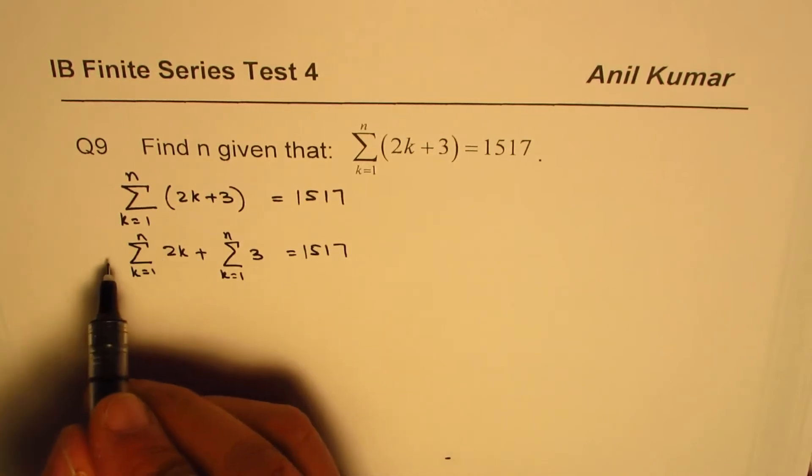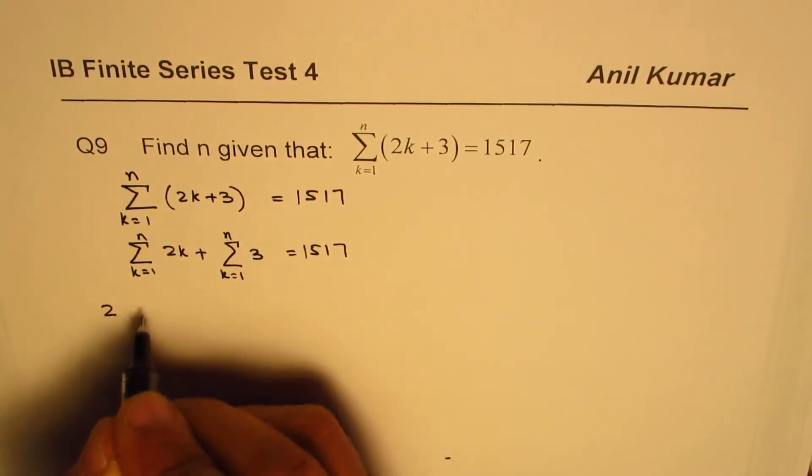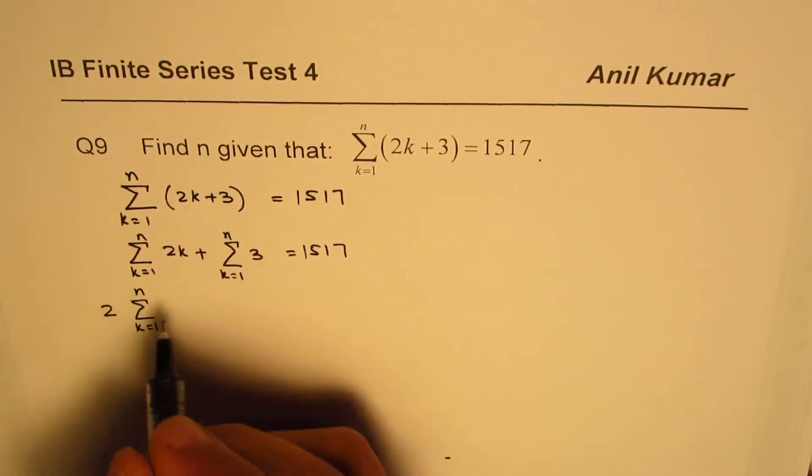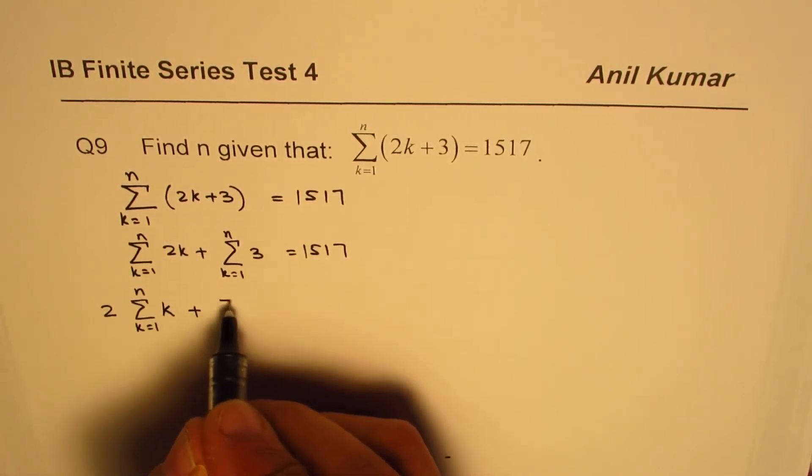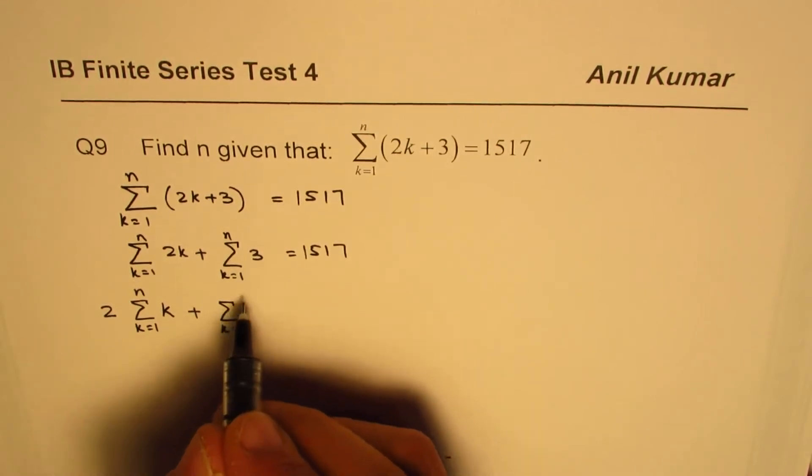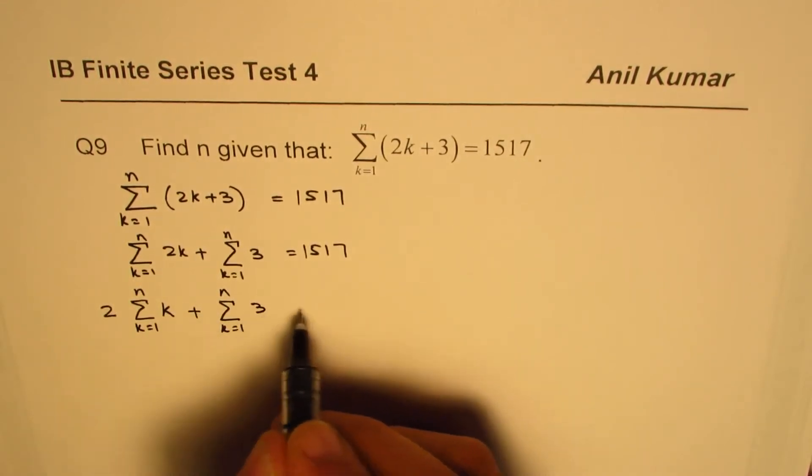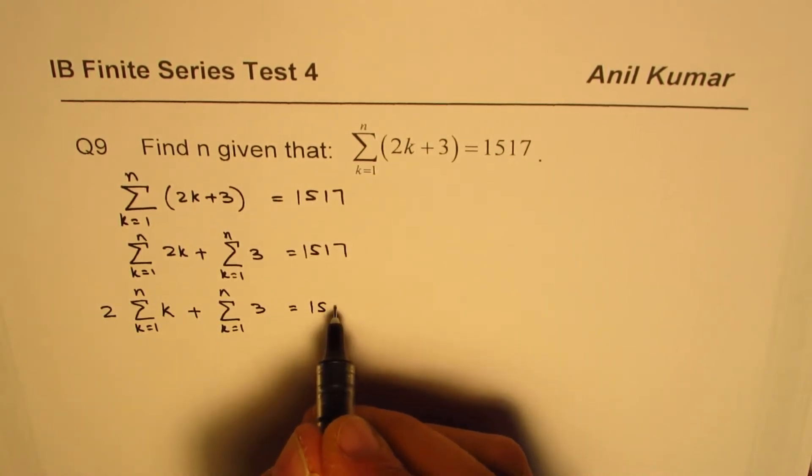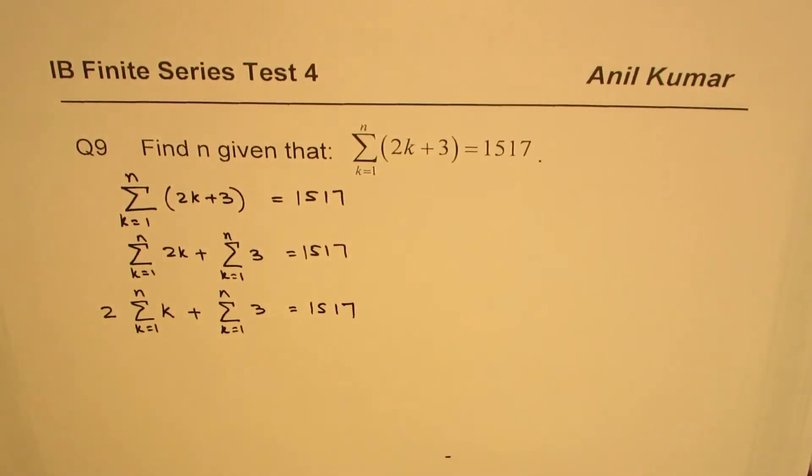2 is a constant. We can take it outside. So we have 2 times sum of n integers from 1 to n plus sum of 3 which is a constant from 1 to n. And that sum should be 1517.